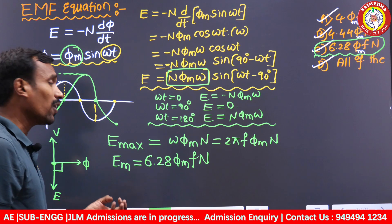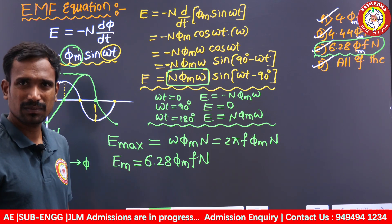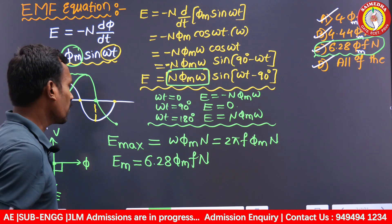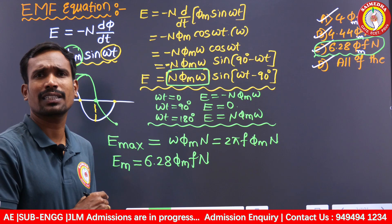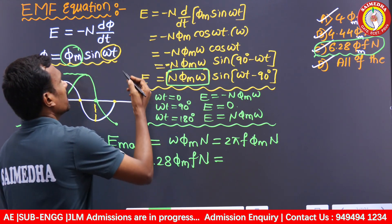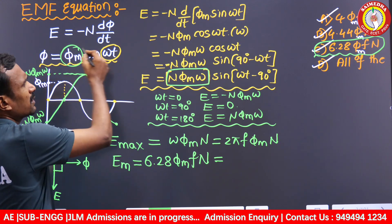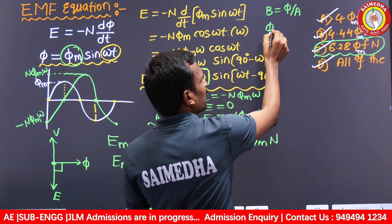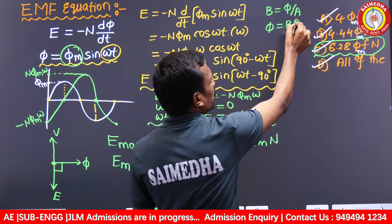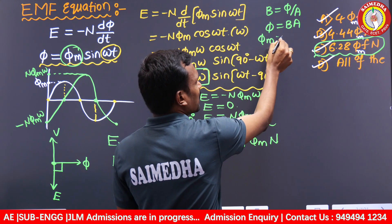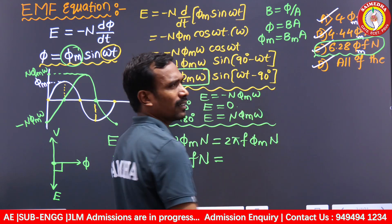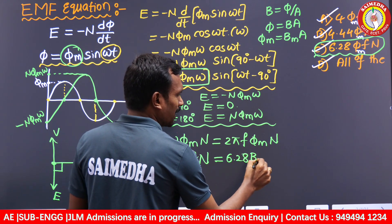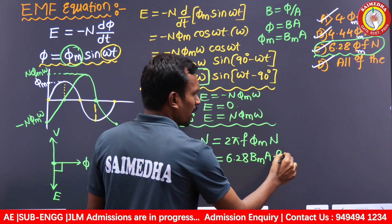This 90° lagging relationship between flux and EMF is important for conceptual questions in competitive exams. Now, E_max = 6.28 × Φ_M × f × N, where Φ_M is the maximum flux. Since flux density B = Φ/A, we have Φ_M = B_max × A. So E_max = 6.28 × B_max × A × f × N.